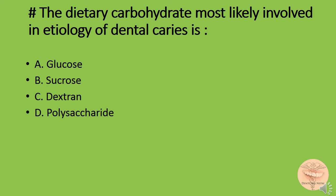The dietary carbohydrate most likely involved in the etiology of dental caries is: option A) glucose, option B) sucrose, option C) dextran, or option D) polysaccharide. The correct answer is option B: sucrose.